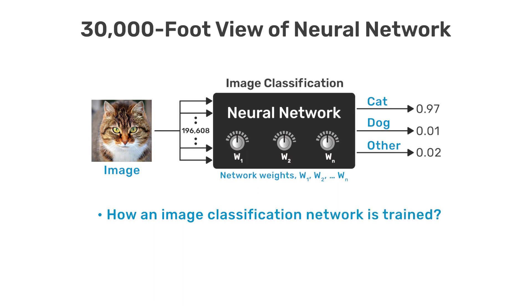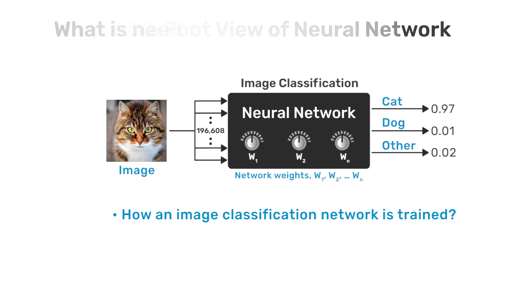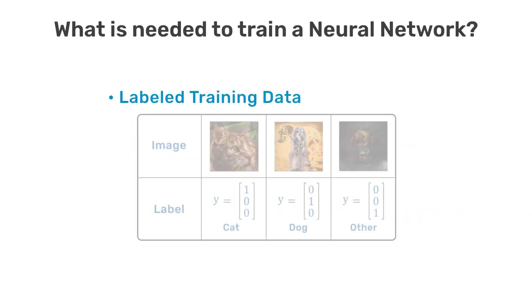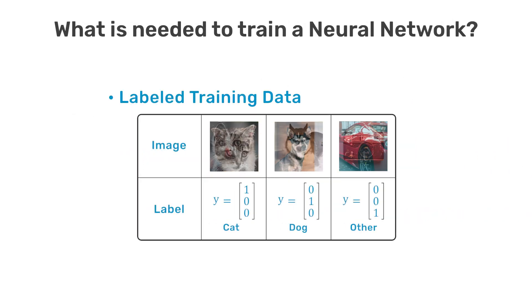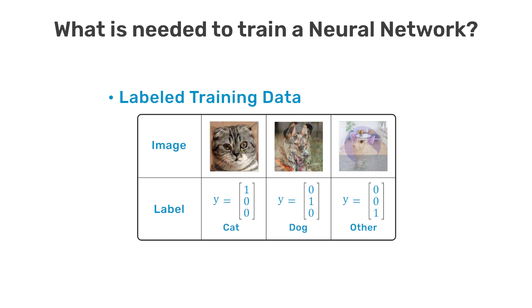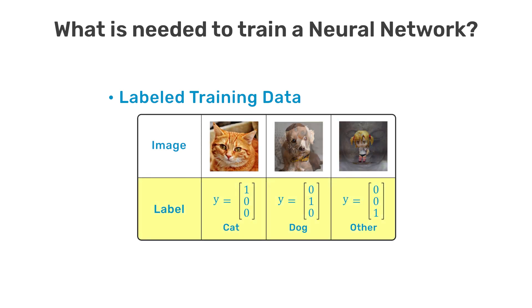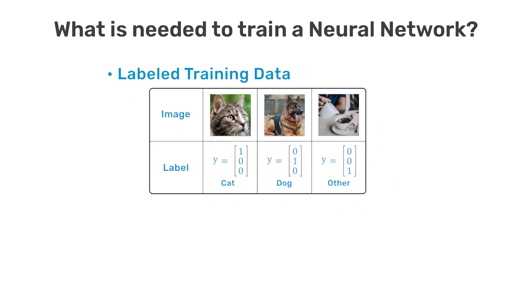To train a neural network to perform image classification we need three things. Labeled training data that consists of thousands of images from each class along with their associated class labels. We also need to define a cost function, also referred to as a loss function, which is a numerical computation that quantifies the error between the network output and the expected result.